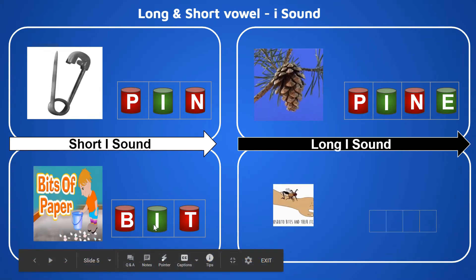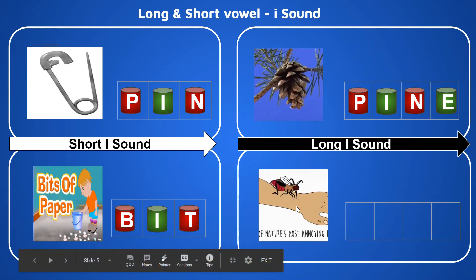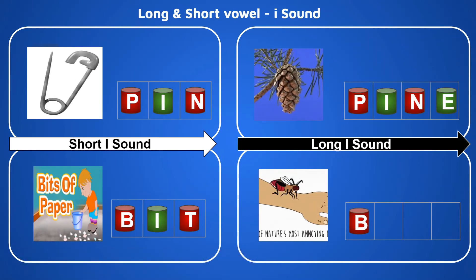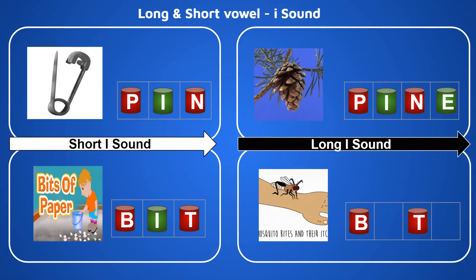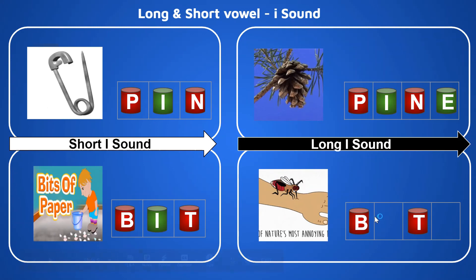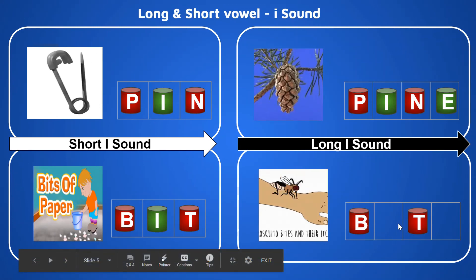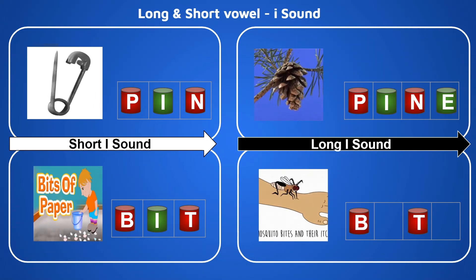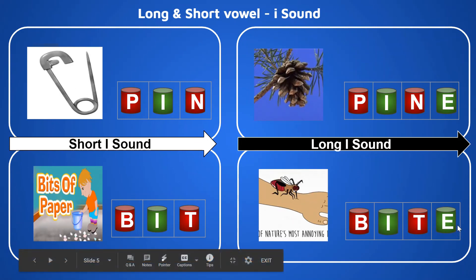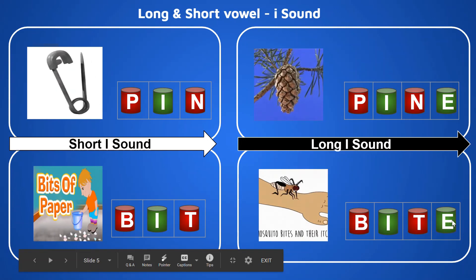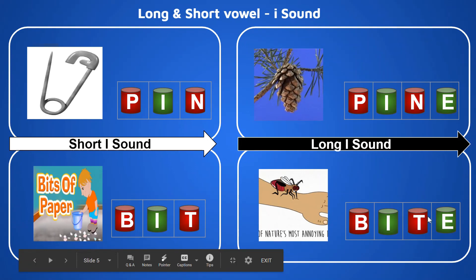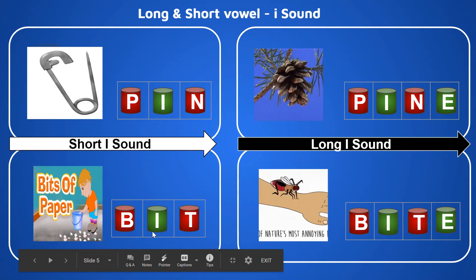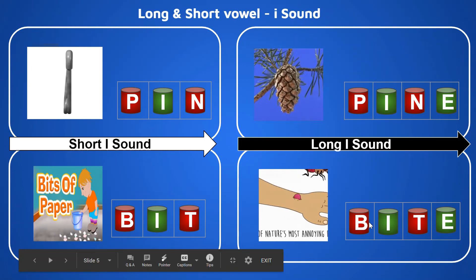Now let's take an example of the long sound. A mosquito bit the hand. Let's look at the word 'bite.' What is the beginning sound? B. What is the ending sound? T. What is the middle sound? Let's break it down: B - I - T - bite. The middle sound is I — the long sound of alphabet I. Look who has come along with I — it is E, the friend of I, giving the long sound. So the short sound is 'bit' and the long sound is 'bite.' Thank you.